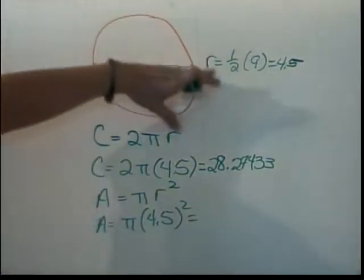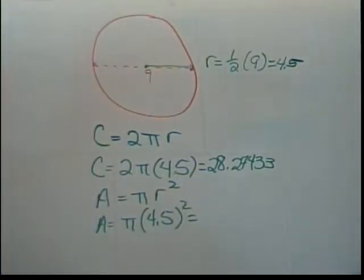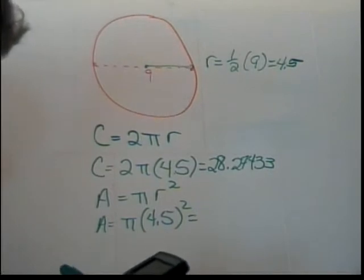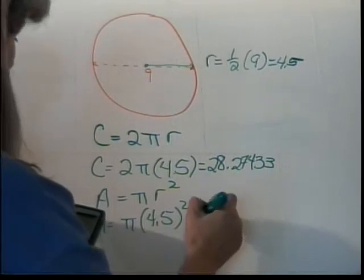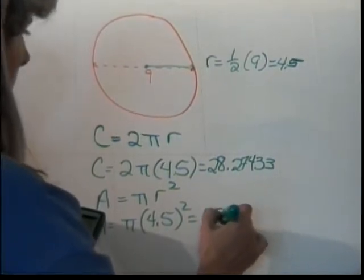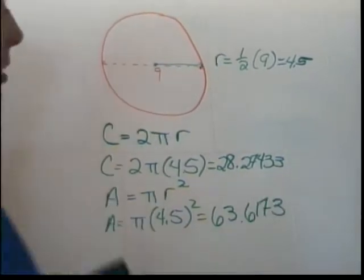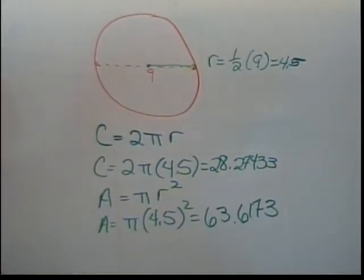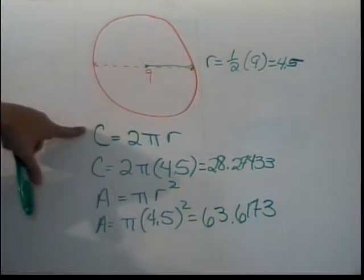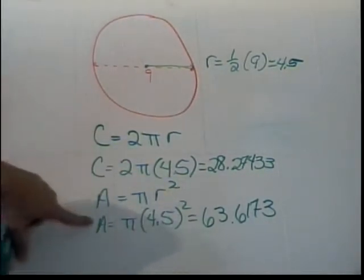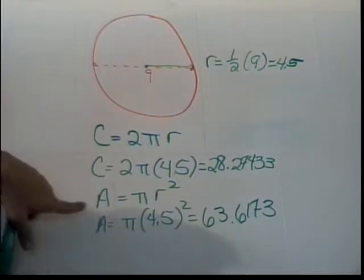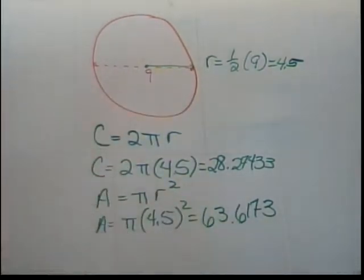That's how many squares it would take to cover this. Obviously, it's not going to be a bunch of whole ones, because you can't fit a bunch of squares in a circle. So, 4.5 squared times pi is going to give us, this is approximately 63.6173 square units. And that's how you go about finding your circumference, also perimeter of your circle, and the area of your circle, which is approximately 63 square units.